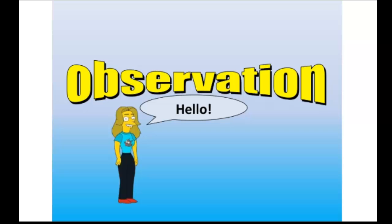Everything shifts to the observer or to the observation. Since the observer is neutral, we have to get into the observation idea to define a personality for every person. So what is an observation, what are the types of observation, and what does yoga say about the definition or structure of observations?